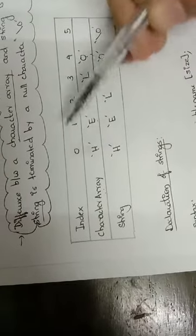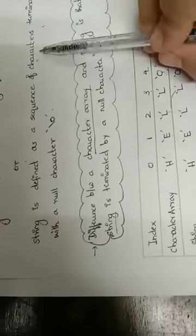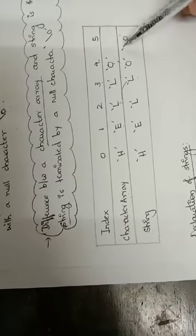As far as an array is concerned, the index will start from 0, 1, 2, 3, 4. So if it is a string, as we studied in the definition, a string is a sequence of characters terminated with a null character. A null character is represented by '\0'. So in a string, it will be represented as H, E, L, L, O, and finally it will be terminated by a null character.